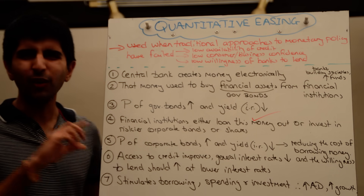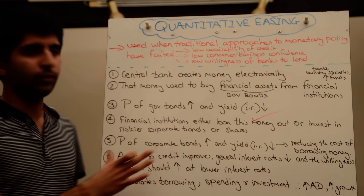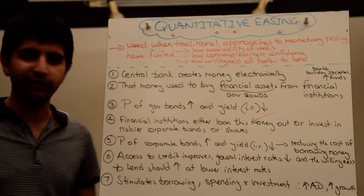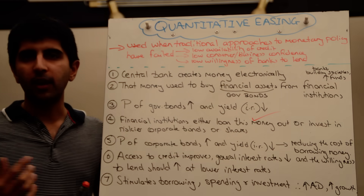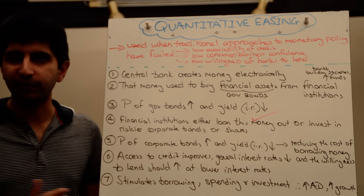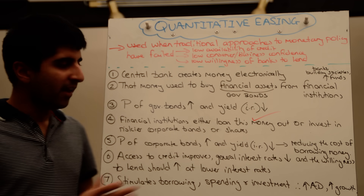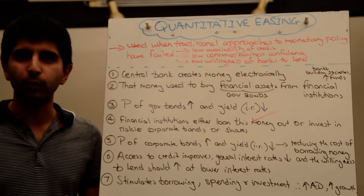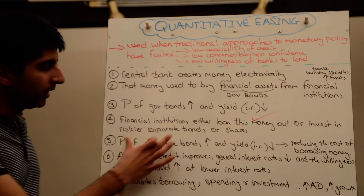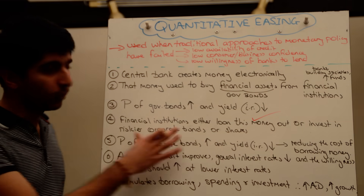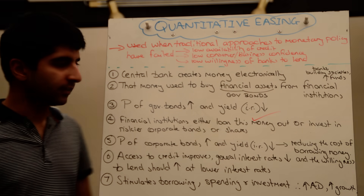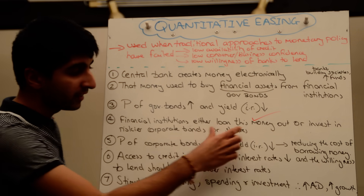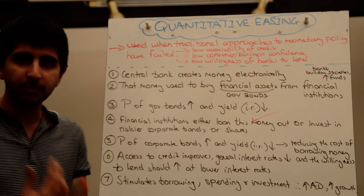If it's not government bonds — because the yield is lower — instead they might invest in riskier corporate bonds or shares. Corporate bonds are slightly riskier than government bonds only in the sense that the risk of default is higher, since private firms are more likely to default than the government. But there are conditions in place which actually reduce the risk involved when people buy corporate bonds, so it's not really that much riskier, but will be a higher-yield asset.